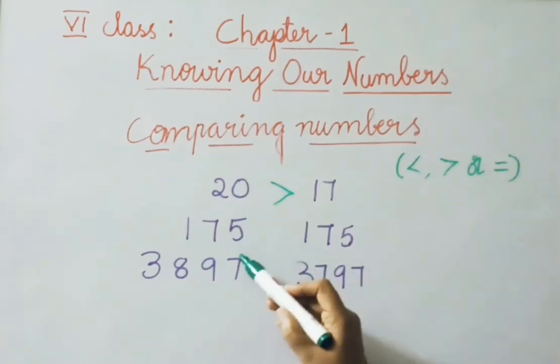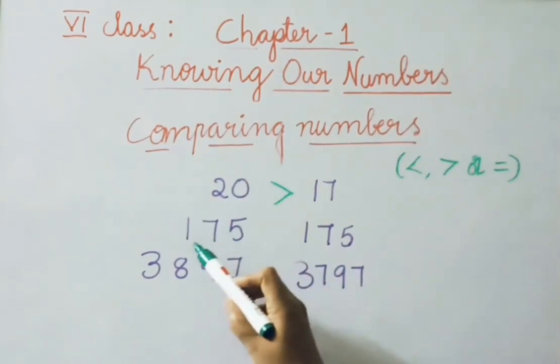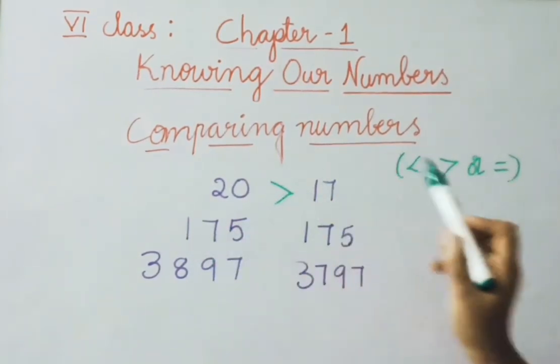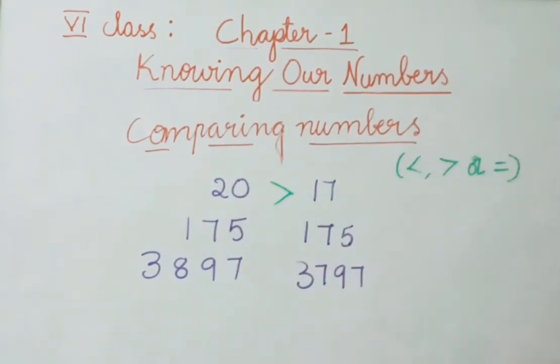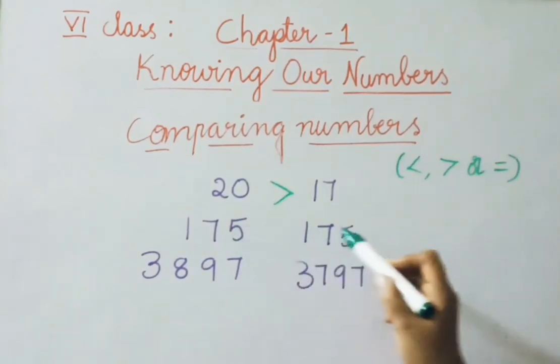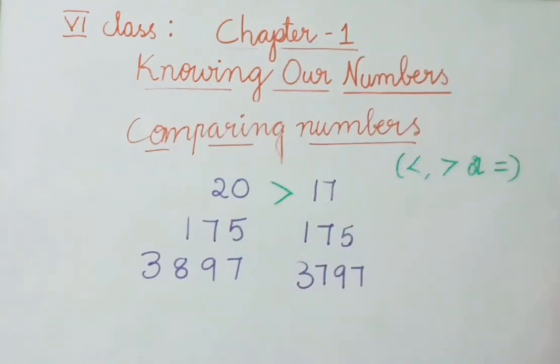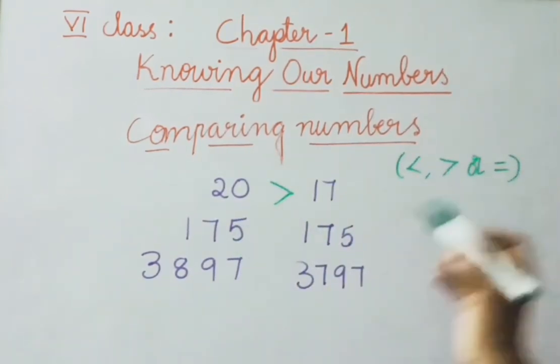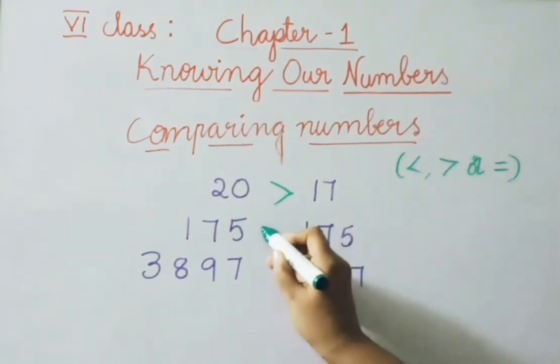See the next example: 175 and 175. Both numbers are equal, so we use the equal to sign.